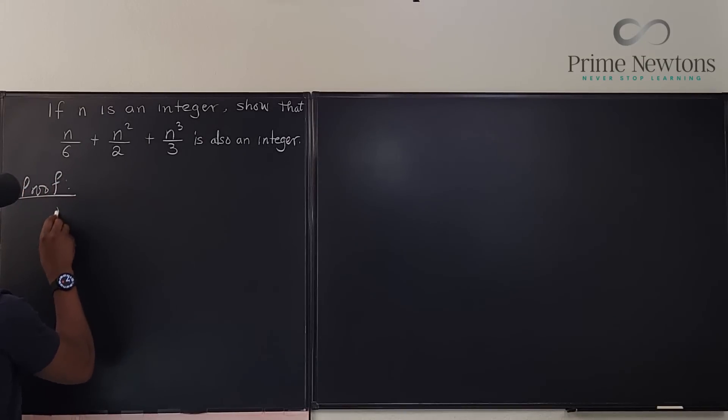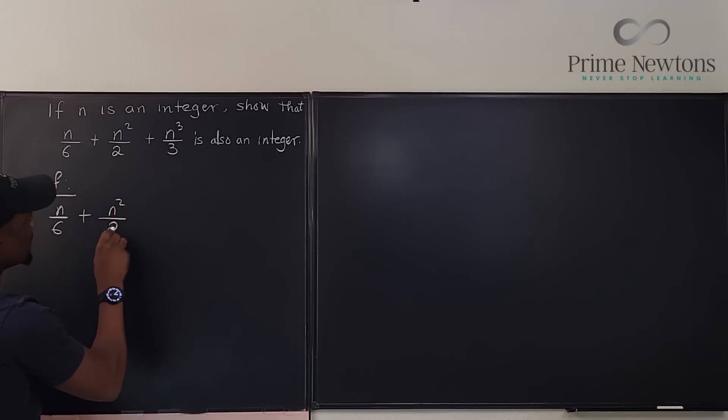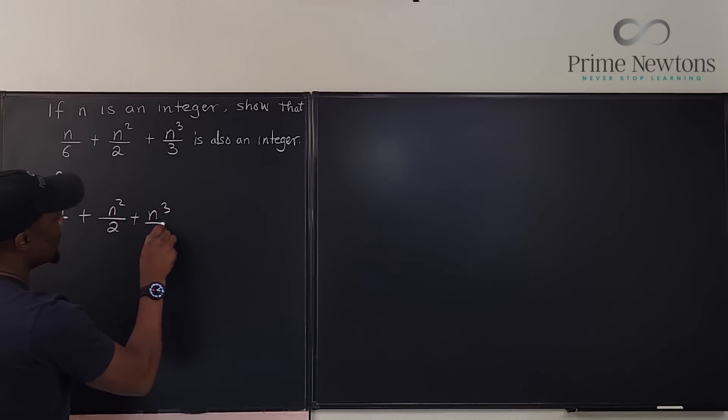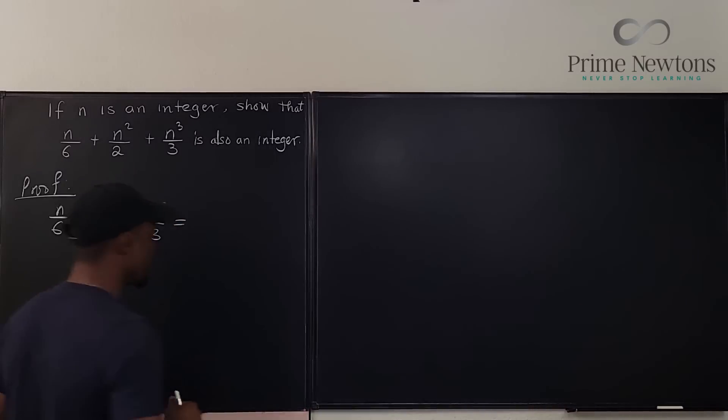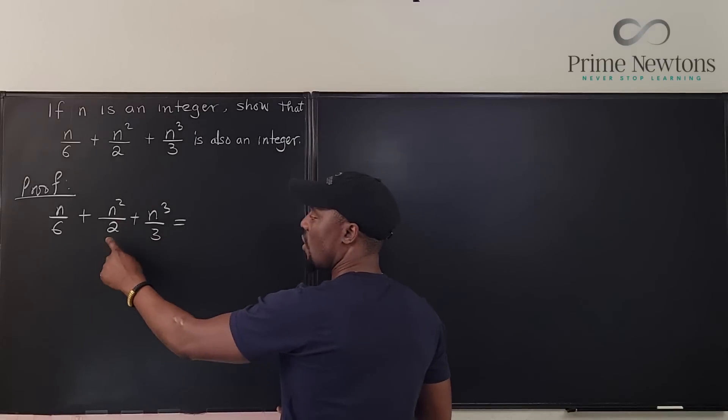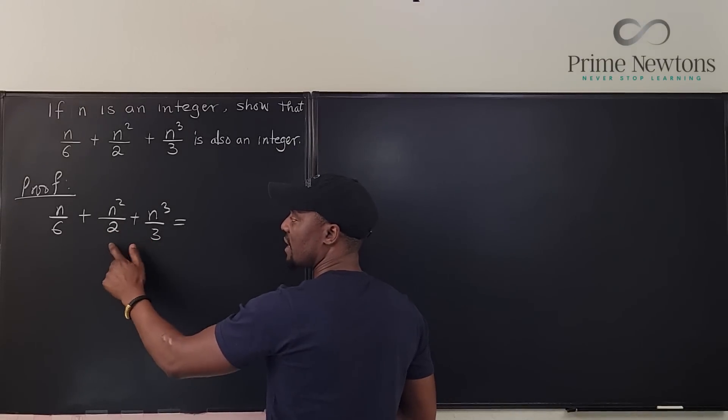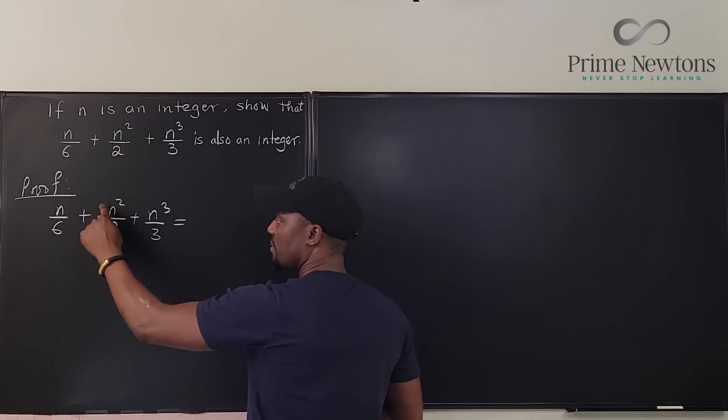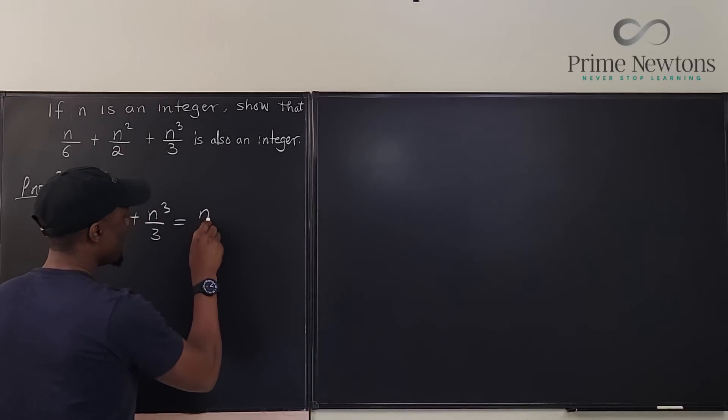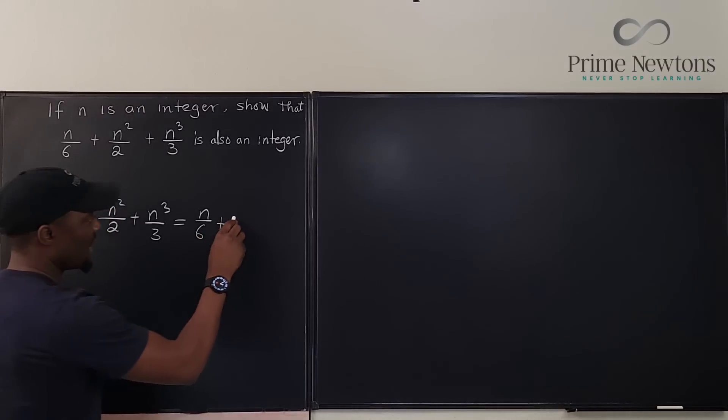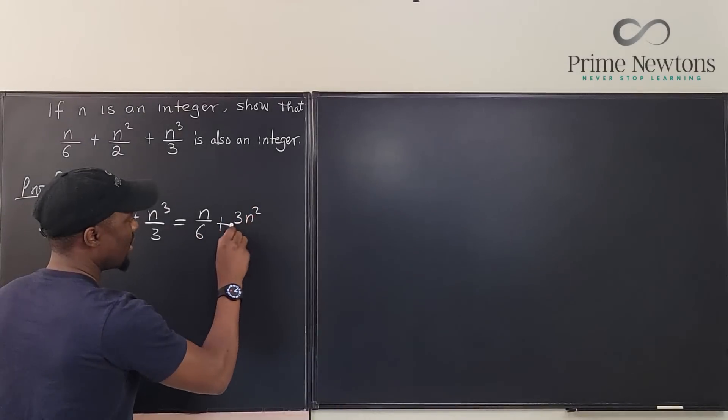n over 6 plus n squared over 2 plus n cubed over 3 can be rewritten if you take all the denominators to be 6. Multiply this by 3, multiply this by 3, it will be n over 6 plus 3n squared over 6.